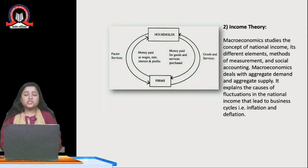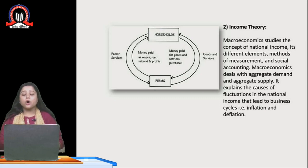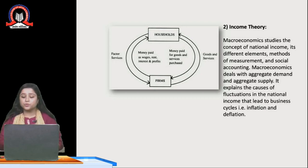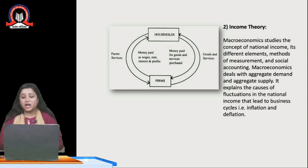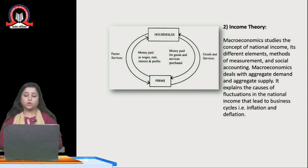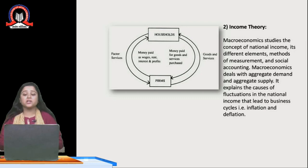The next feature of macroeconomics is income theory. Macroeconomics explains the causes of fluctuations in national income — why national income fluctuates and how it leads to business cycles, how inflation happens, and how depression occurs in the economy. So macroeconomics studies basic concepts like national income, including the different methods of measurement of national income.